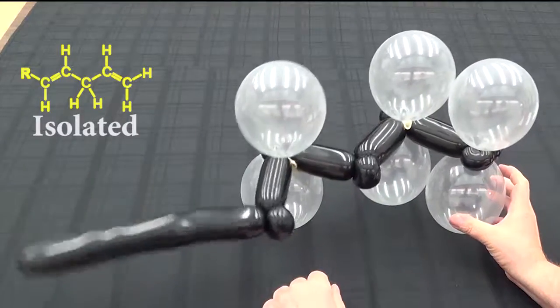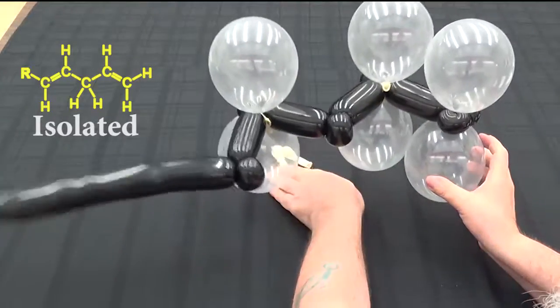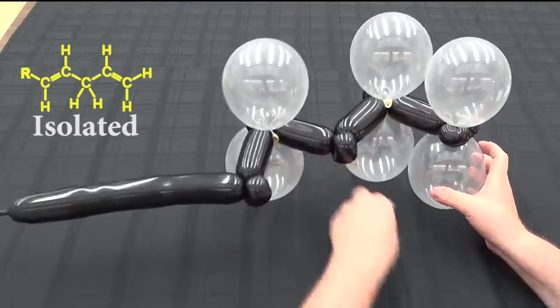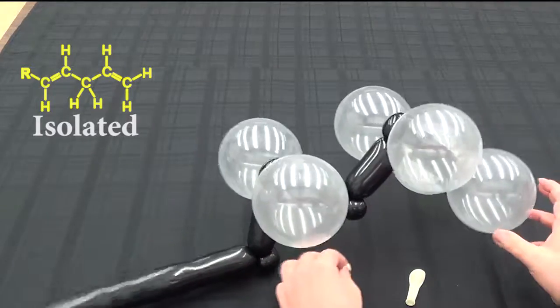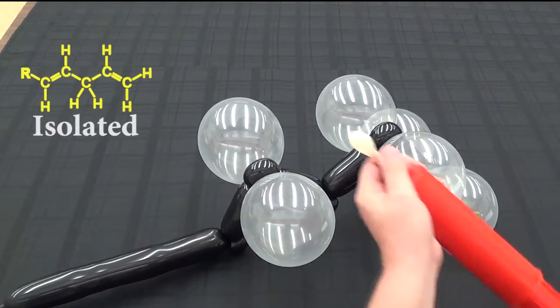Now obviously this is isolated bonds. You can see there's a gap between the two double bonds. Which means that there's not going to be a continuous interaction across the system. So we're making the isolated case first.